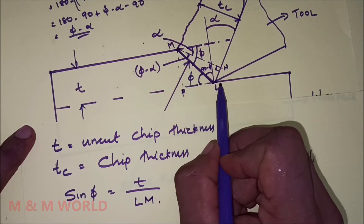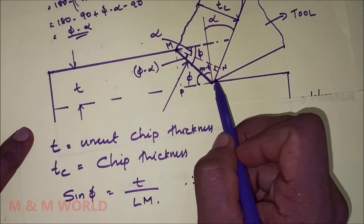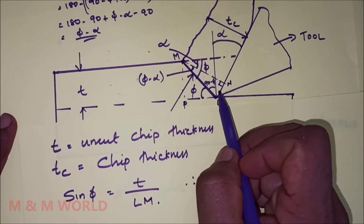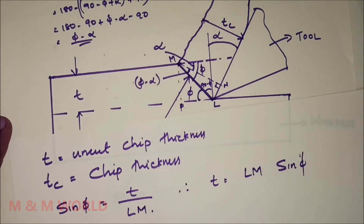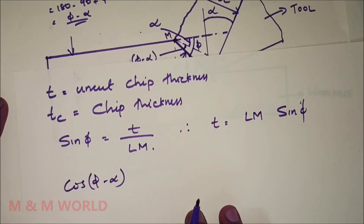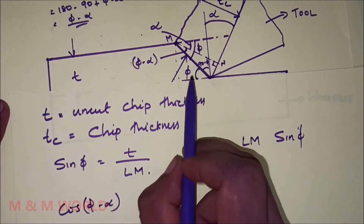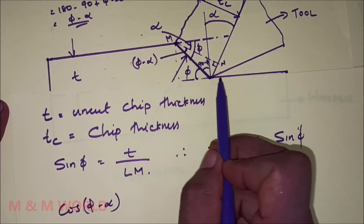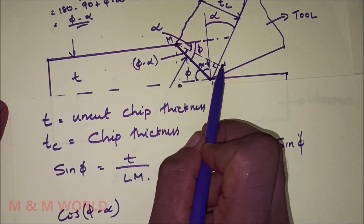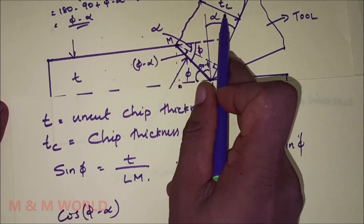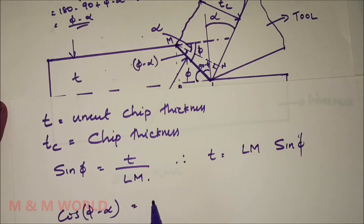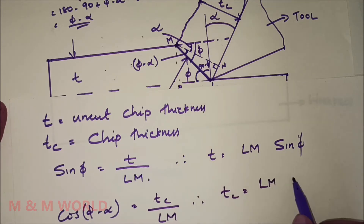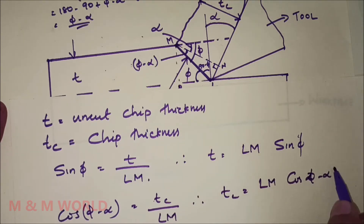Similarly, considering the other triangle LMN, what will be the value of cos(phi minus alpha)? Cos(phi minus alpha) is equal to the adjacent side MN divided by LM, and MN is equal to Tc. So Tc is equal to LM times cos(phi minus alpha).